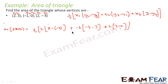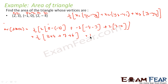So this is nothing but 1/2 into 2 times 4, plus (-1) times (-7) which is +7, plus 2 times 3 which is 6. So what you get is 1/2 into (8 + 7 + 6), that is 1/2 into 21, which is 21/2. That is my answer.